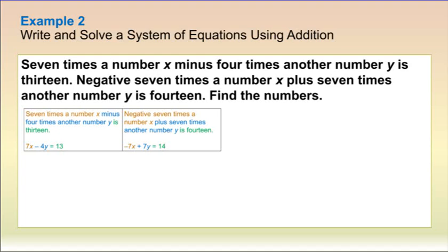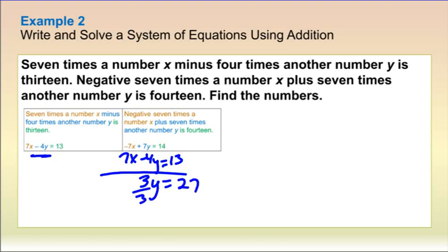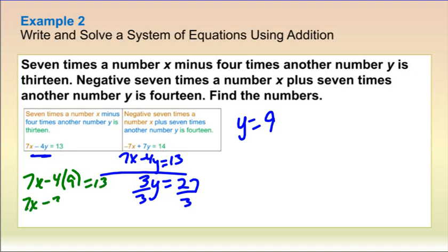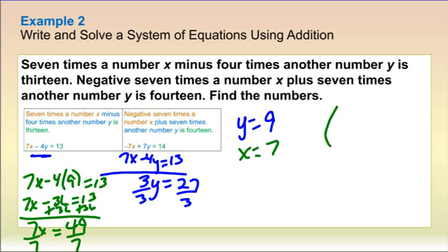Here you can see how they set up two equations from a word problem. Using elimination: place 7x minus 4y equals 13 underneath. The x's eliminate each other. 7y minus 4y is 3y. 14 plus 13 is 27, so y equals 9. Substitute 9 in for y in one of the equations: 7x minus 4 times 9 equals 13, giving 7x minus 36 equals 13. Add 36: 7x equals 49. Divide by 7: x equals 7. Ordered pair: (7, 9).